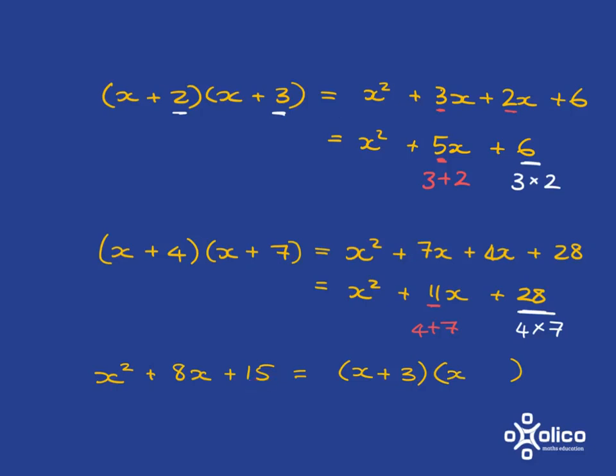And then remember what we've just noticed. This 15 must be made up of this multiplied by this. 3 times what gives me 15? It's going to be 3 times 5. Or I could have done it by saying, what else I know is that this coefficient of x is this plus this. So 3 plus what will give me 8? 5. So I could have done it either way.